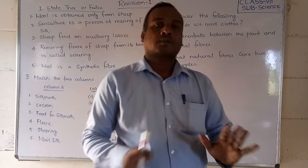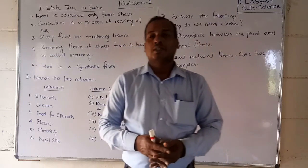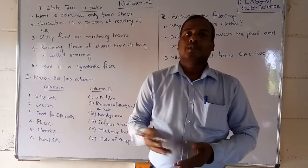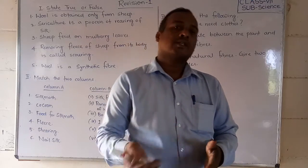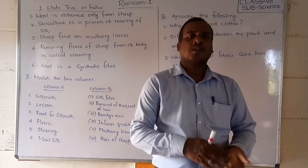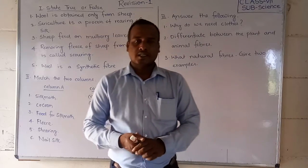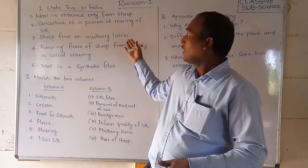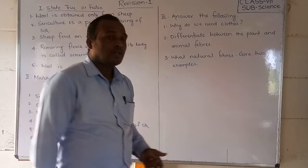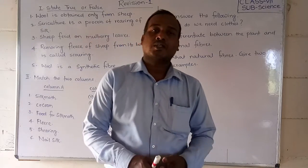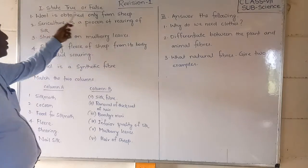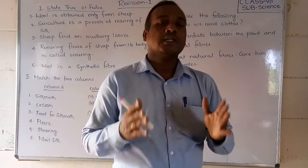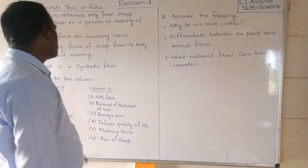In our live classes, I have already discussed the important points: how wool is obtained from sheep, how silk is obtained from the silk moth, and what plant fibers are. Today we will discuss some important questions — true or false, match the columns, and some short answer questions. Let us start with the true or false section. I have written five questions and you should tell whether the statements are true or false.